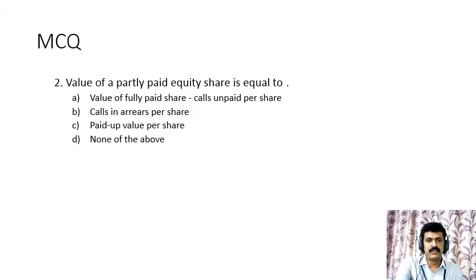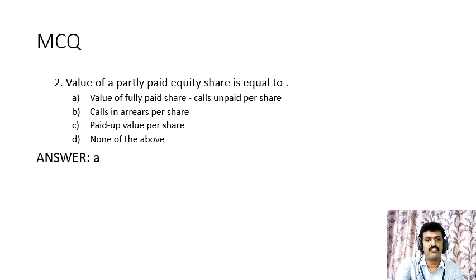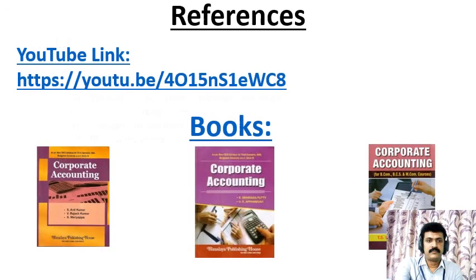Question 2: the value of a partly paid equity share is equal to — (a) value of fully paid share minus calls unpaid per share, (b) calls in arrears per share, (c) paid-up value per share, (d) none of the above. The correct answer is option (a): value of fully paid share minus calls unpaid per share.